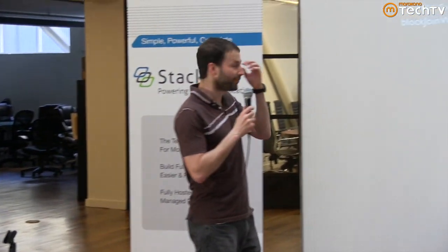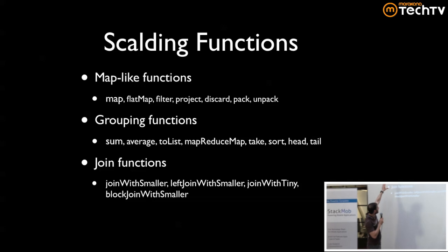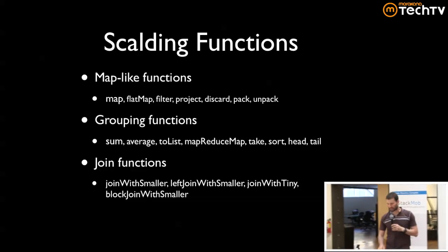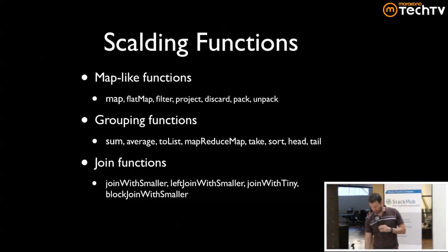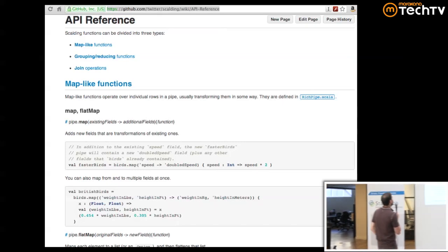There are three sets of functions that really matter — two that are core and one built on top. You have the map functions. In Hadoop, you do the map, define some grouping, and on that grouping you do some kind of reduction. That's where you see the standard operations: sum, average, take, head, sort — everything from normal functional programming. There's a pretty decent API on the GitHub page.